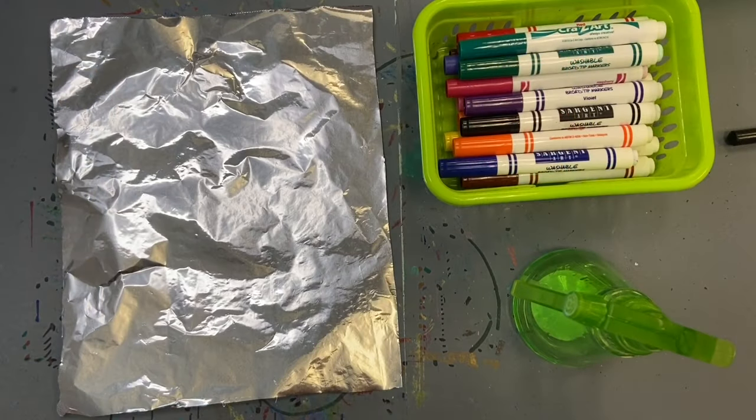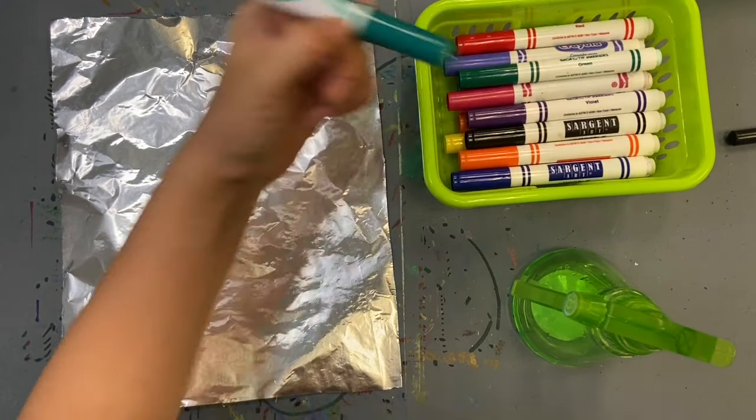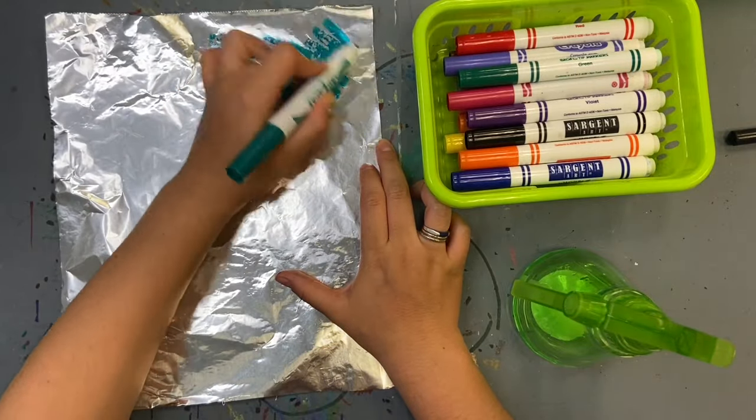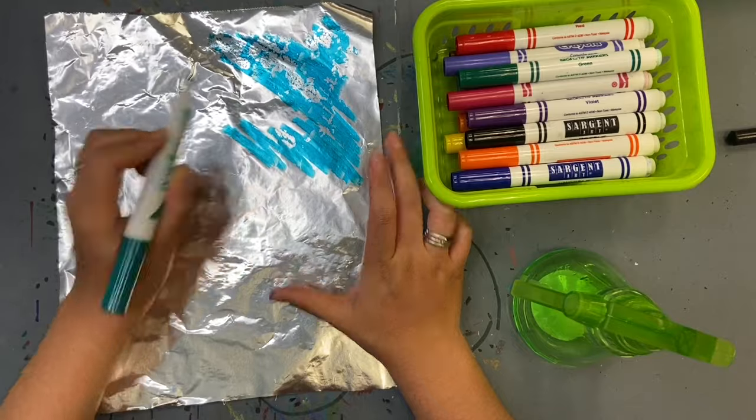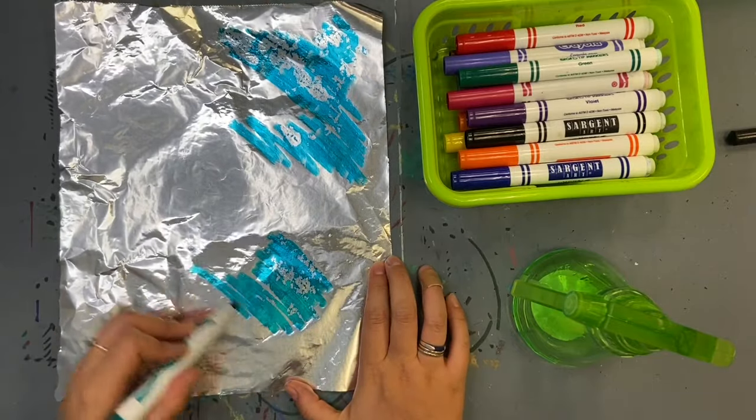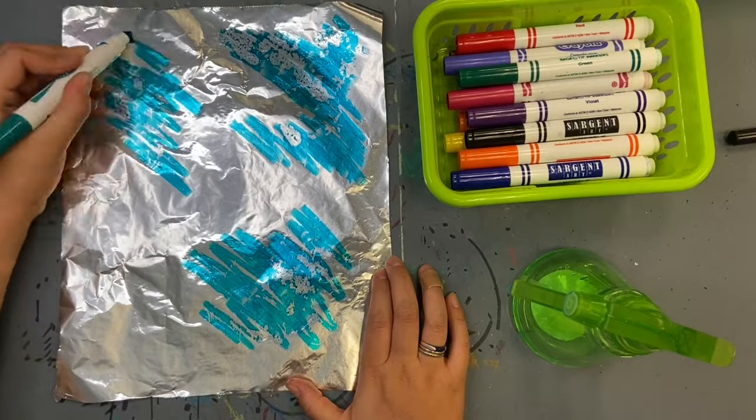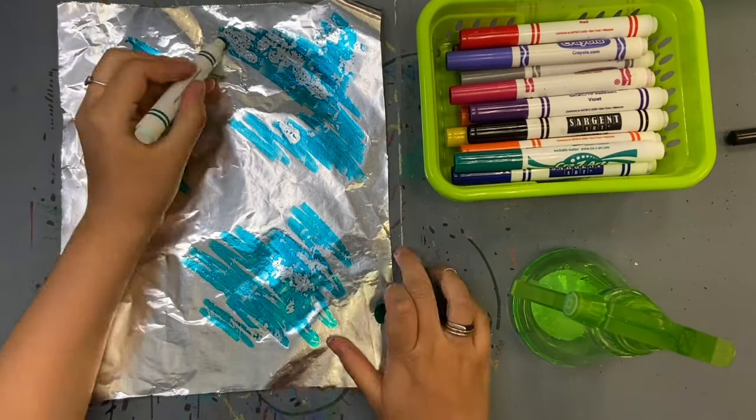The next step is to use markers and color all over the foil. Fill the whole space. The marker ink is your dye and you want to get it everywhere. I use a bunch of different colors just like Matisse and overlap the markers to mix colors.